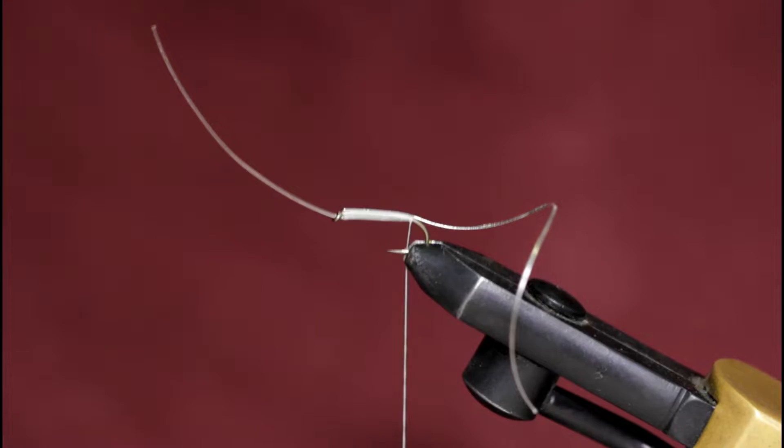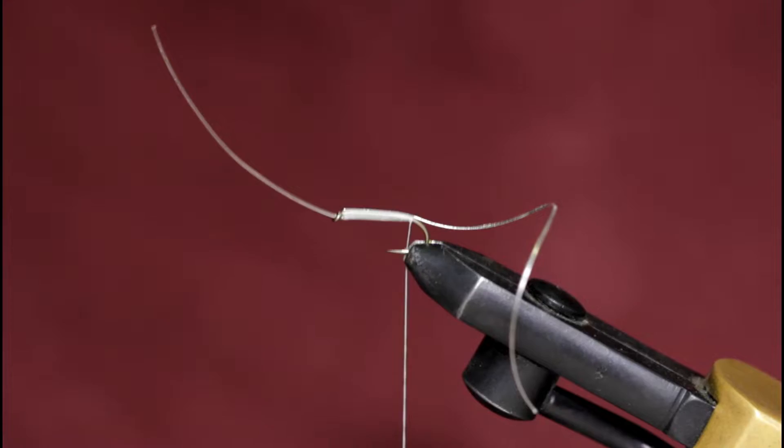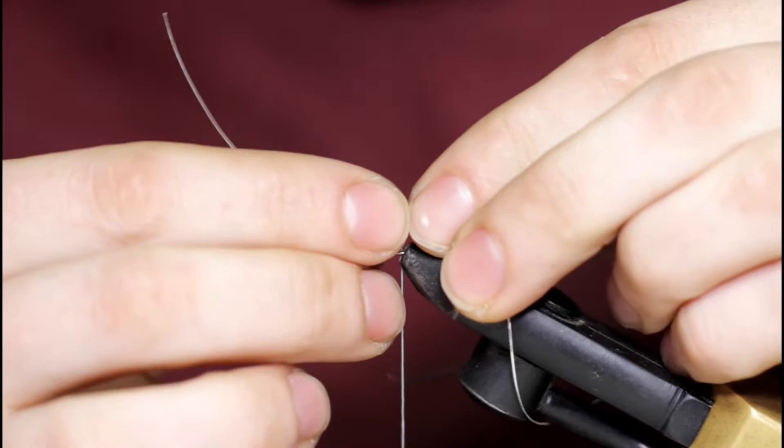Now I'm going to grab a piece of large silver tinsel, snip a tie in point here, lay this on the body and tie up towards the hook eye.